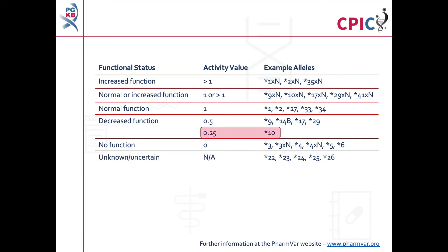As a result of the CPIC CYP2D6 genotype to phenotype standardisation project, the CYP2D6 star 10 allele was assigned an activity value of 0.25, reflecting its significantly reduced function compared to other decreased function alleles. As this guideline was published before completion of the standardisation project, the star 10 allele is still given an activity value of 0.5 in the original manuscript. However, the guideline has been fully updated in the CPIC database to account for the new activity value of star 10, and this update has not altered the guideline recommendations.